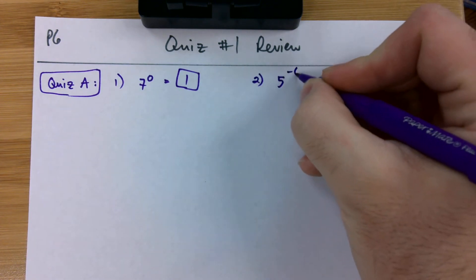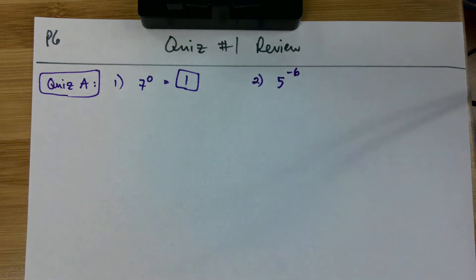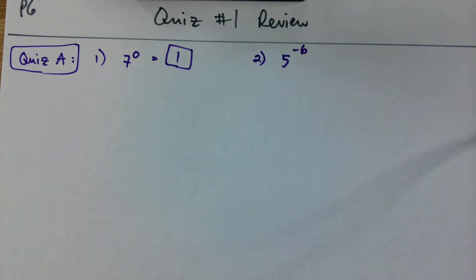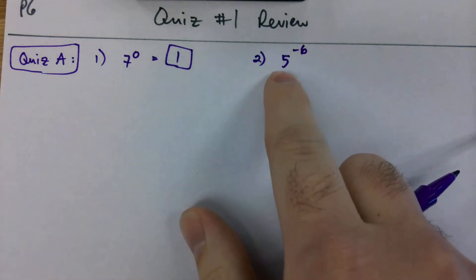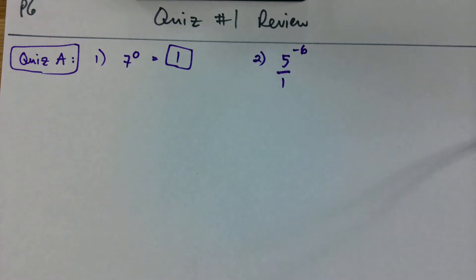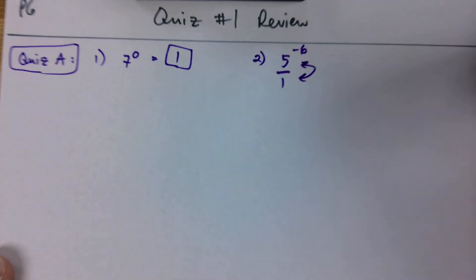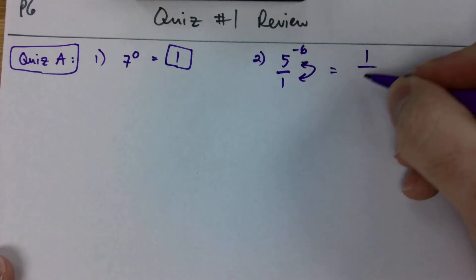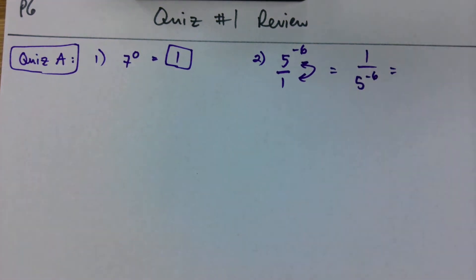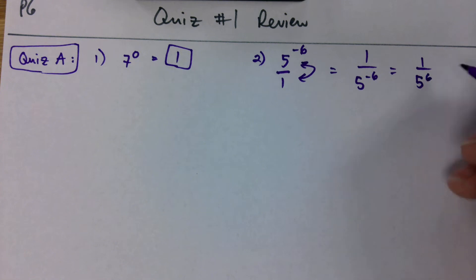Number two, we got five to the negative sixth power. Anytime we have a base with a negative exponent, our goal is to make that exponent positive. In order to do that, we have to turn five into a fraction, so we can say that five to the negative sixth over one is what we got. We're going to flip our numerator and our denominator so that we get one over five to the negative sixth. Now that we've completed our flip, we can make our exponent positive. We get one over five to the sixth, which is option C.